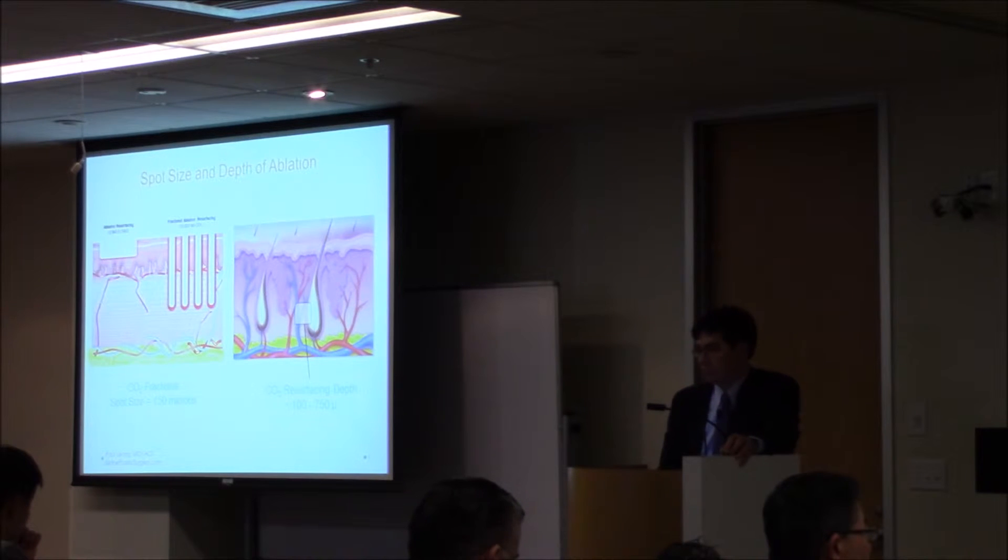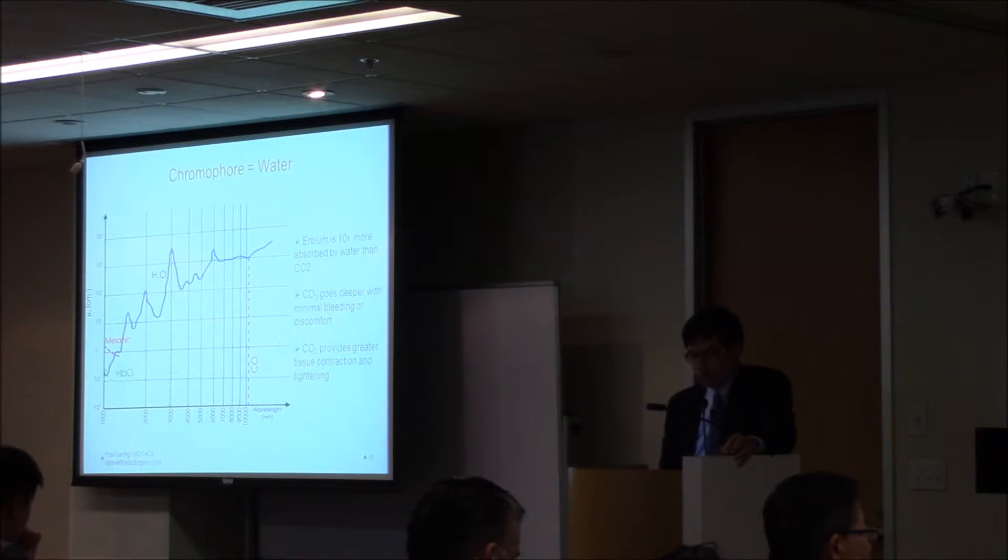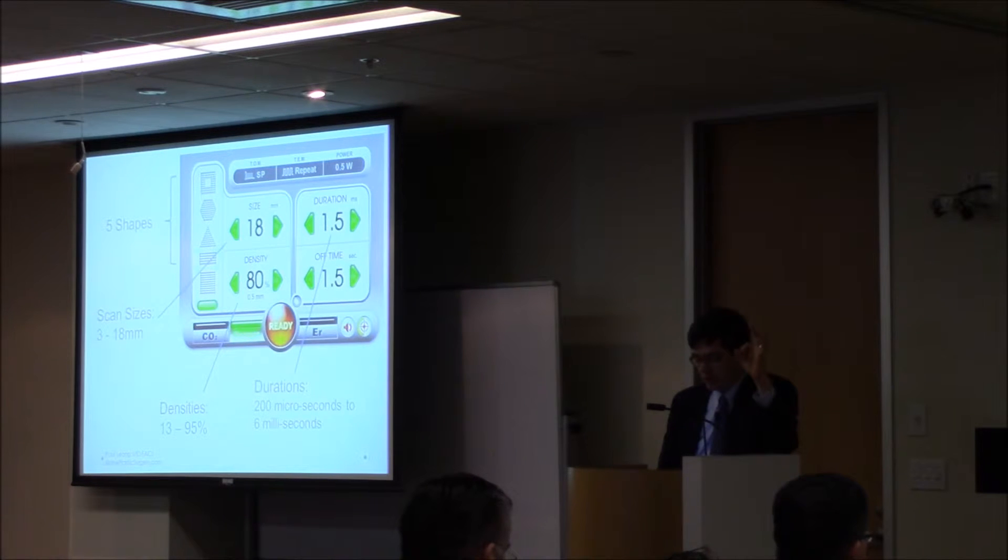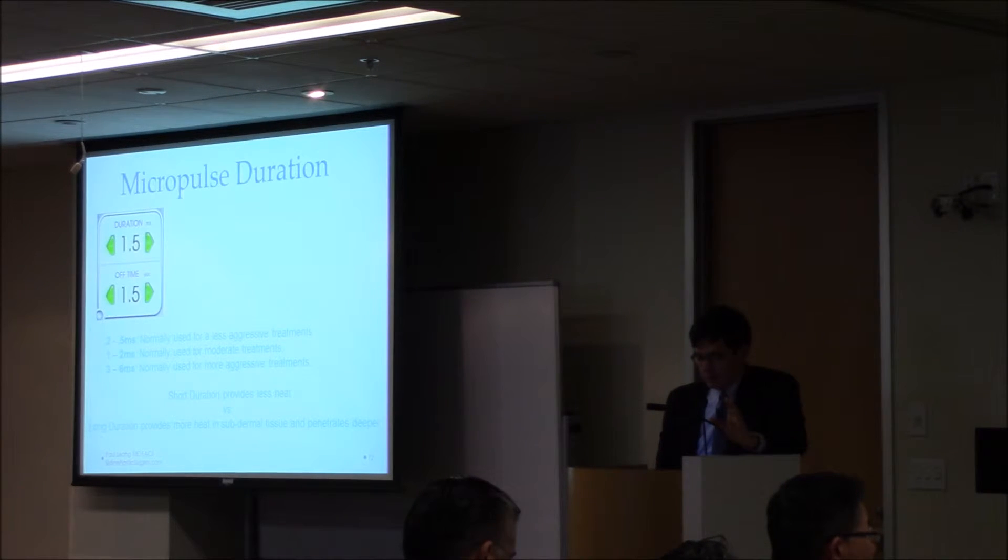The key target is water. This is the control panel on this device. You can see the scan size - that's the size of the little quarter shape that is actually burned each time you pull the trigger. The duration is how long the light comes down. The density is, within that size, what percentage of that skin is actually ablated. You can go from very high - 80-85% - or you can go down to 15%. We usually go intermediate, 35%.